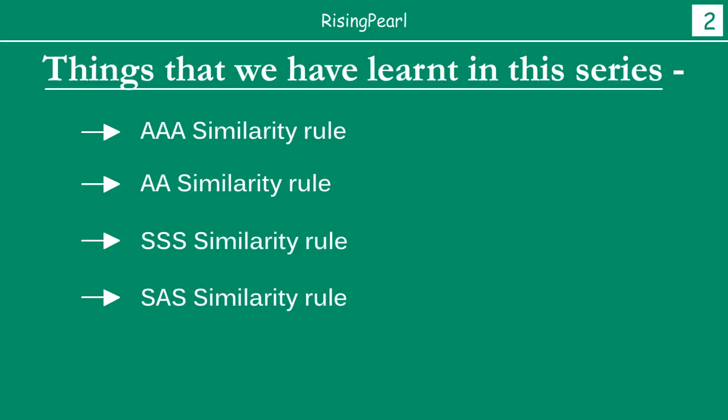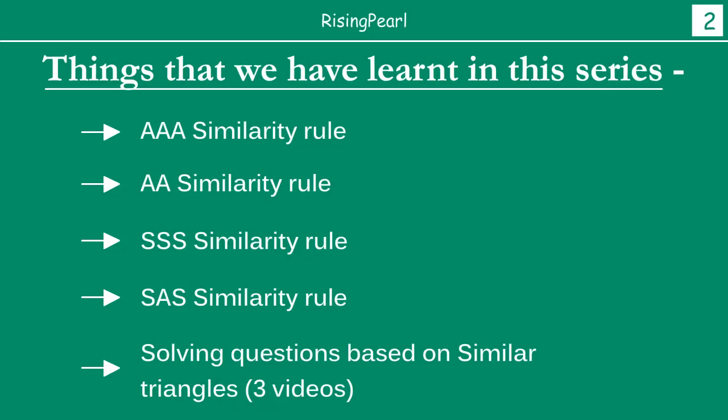Friends, when we looked at each of these similarity rules and similarity theorems, what we looked at was: if each of these conditions were given, how can we prove that two triangles are similar? For each of these, we looked at what the theorem is telling us very clearly, and then how we can prove the theorem. We then looked at solving questions or problems based on similar triangles, which we covered over the course of three videos.